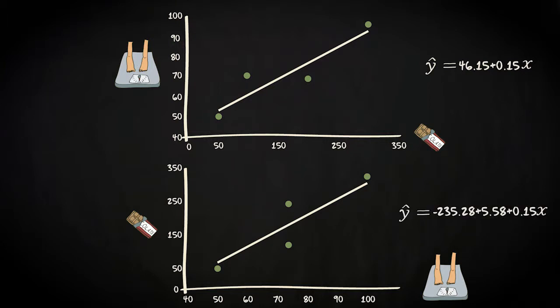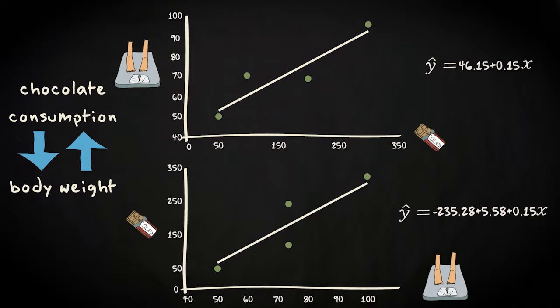The most likely explanation of the relation between chocolate consumption and body weight, however, is that causality runs in both ways. The more chocolate you eat, the heavier you get, and the heavier you get, the more you crave chocolate.